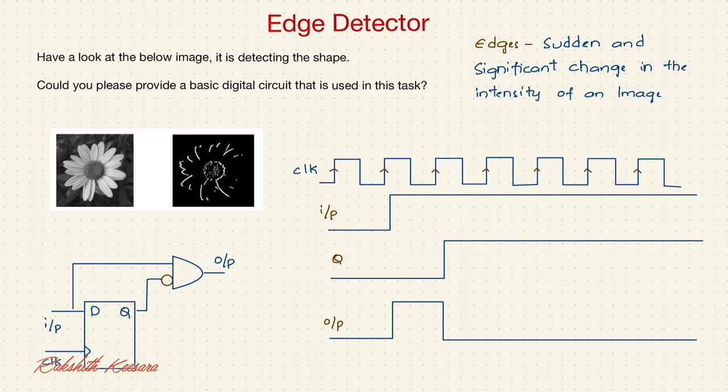Hey guys, welcome. This is the question that I asked on LinkedIn. Have a look at the below image. It is detecting the shape. Could you please provide a basic digital circuit that is used in this task.